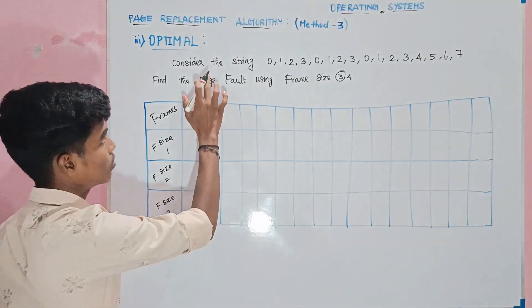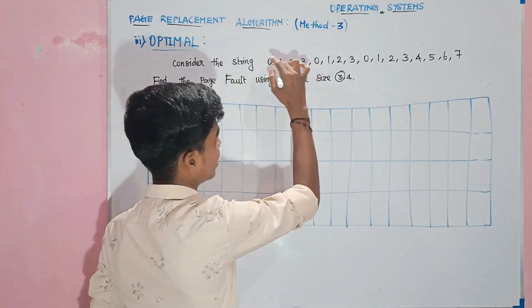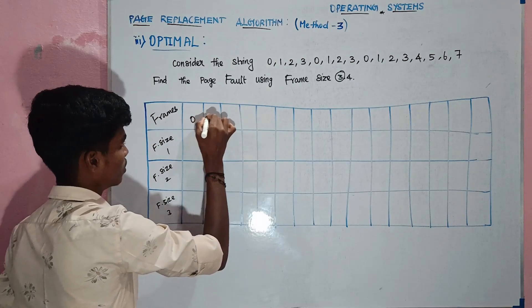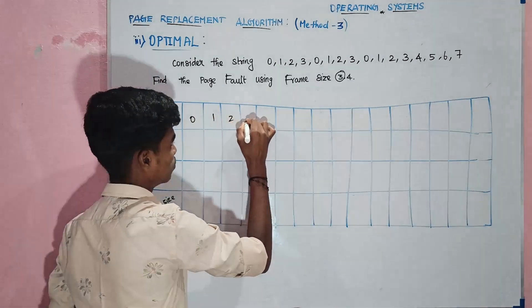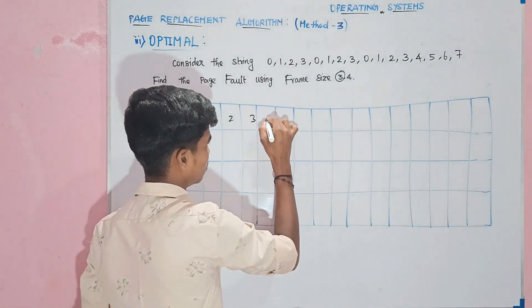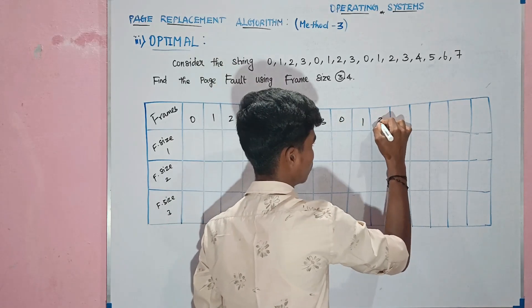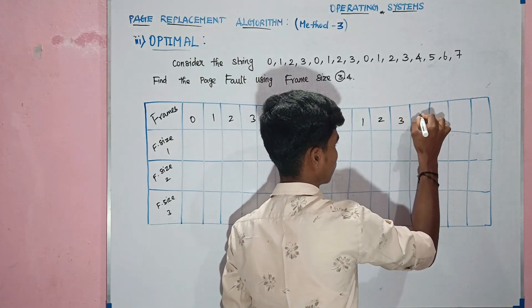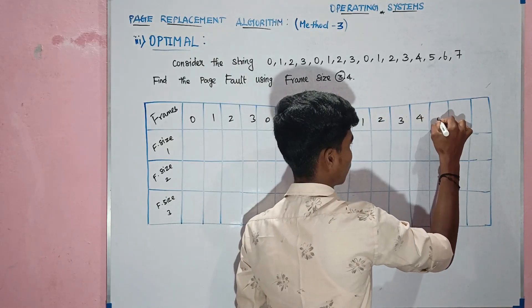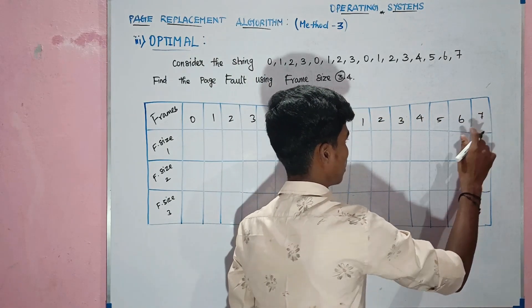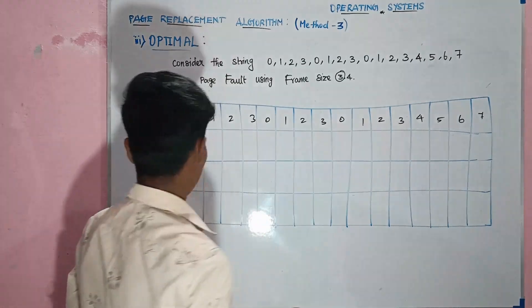The reference string will be: 0, 1, 2, 3, 0, 1, 2, 3, 0, 1, 2, 3, 4, 5, 6, 7.